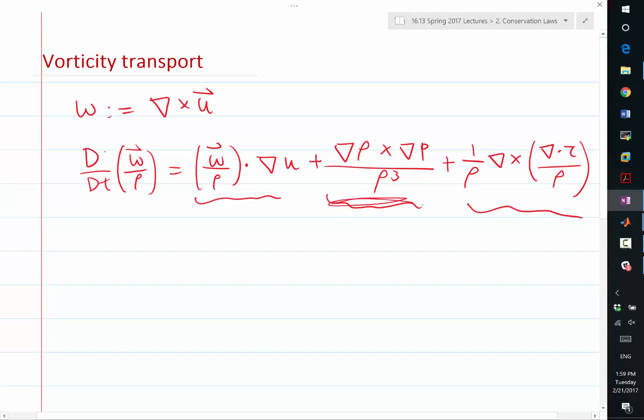The second term is the misalignment between the density gradient and pressure gradient. It's called the baroclinic torque. It happens whenever the gradient of density is not aligned with the gradient of pressure.